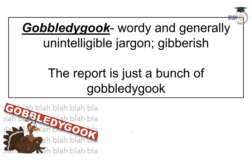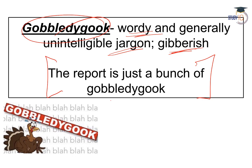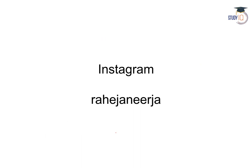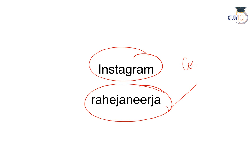The last word is gobbledygook. Gobbledygook shabd ka arth hota hai — gibberish, nonsense bolna, bohot zyada shabdon ka prayog karna lekin woh nonsensical hota hai, jargon hota hai. Usage: The report is just a bunch of gobbledygook — gibberish, nonsensical. You can connect with me on Instagram and mention any doubts or suggestions in the comment section.